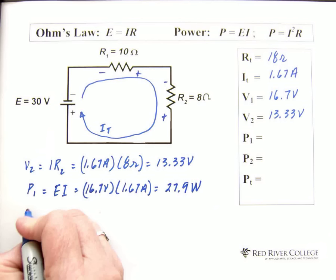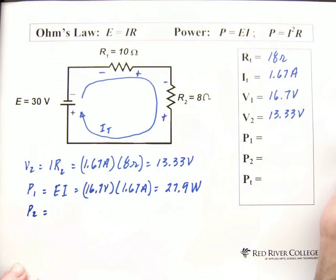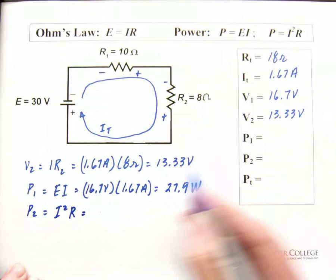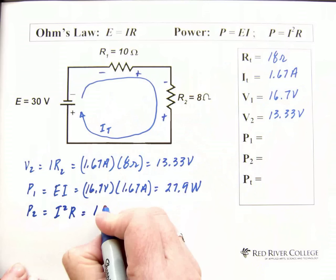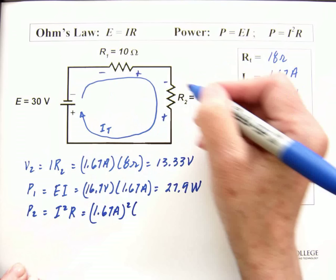Now, I'm going to solve for power 2. That's the power across this resistor. And I'm going to use I squared R for this one. So, current squared times the resistance. The current, again, that's running through this resistor is 1.67 amps. So, 1.67 amps squared times this resistance, which is 8 ohms.